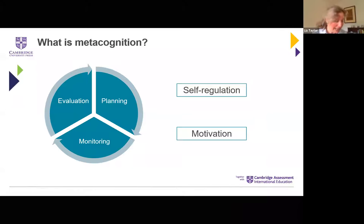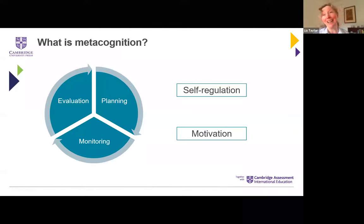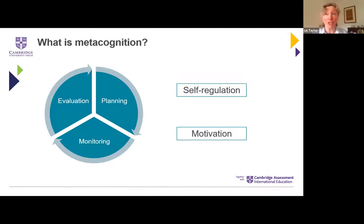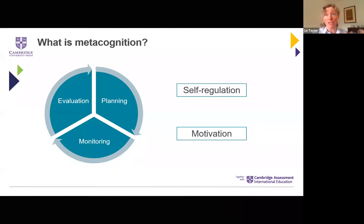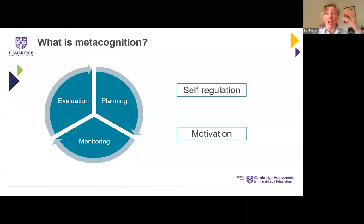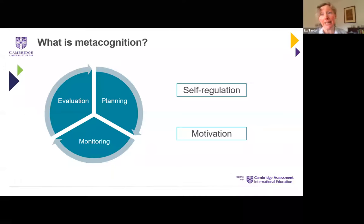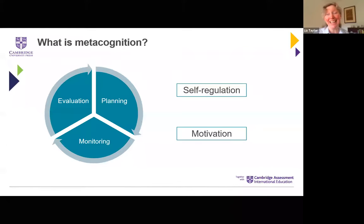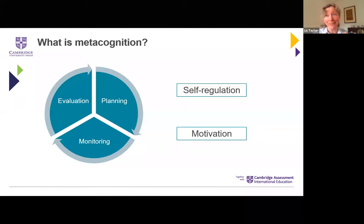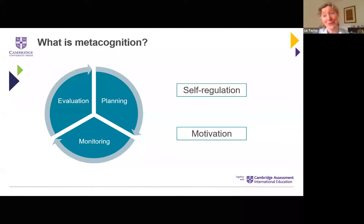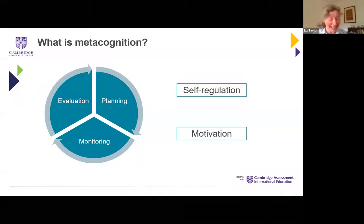A really good self-regulated learner is able to approach a new task with confidence. They have a toolkit of different strategies — cognitive and metacognitive — they're able to reflect on those, change them if they go wrong, and they have good motivation. Motivation fits in here because there's no point in having really good planning and checking and evaluating skills if we're really negative about the learning, or if we just can't be bothered. So there's a self-management element in that as well.